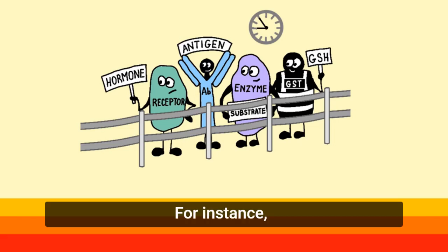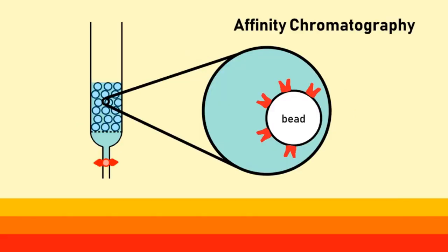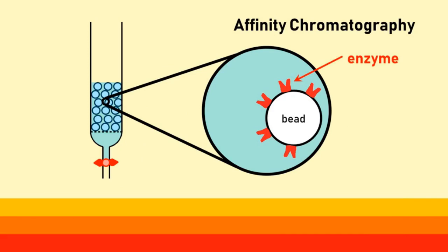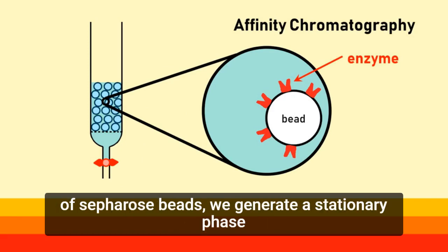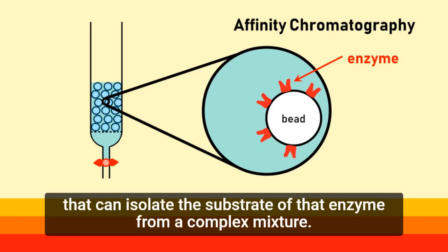For instance, if we conjugate an enzyme onto the surface of sepharose beads, we generate a stationary phase that can isolate the substrate of that enzyme from a complex mixture.